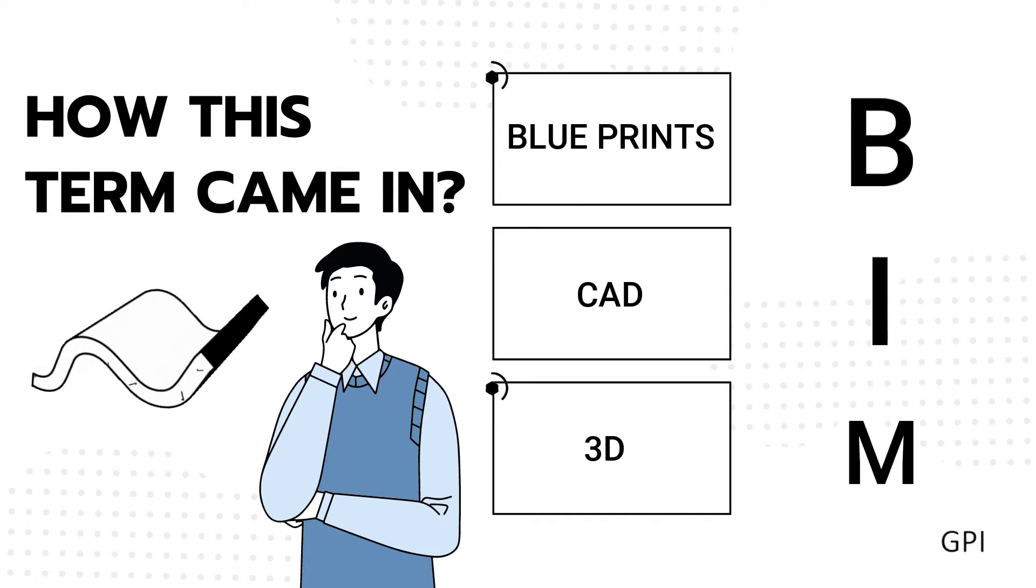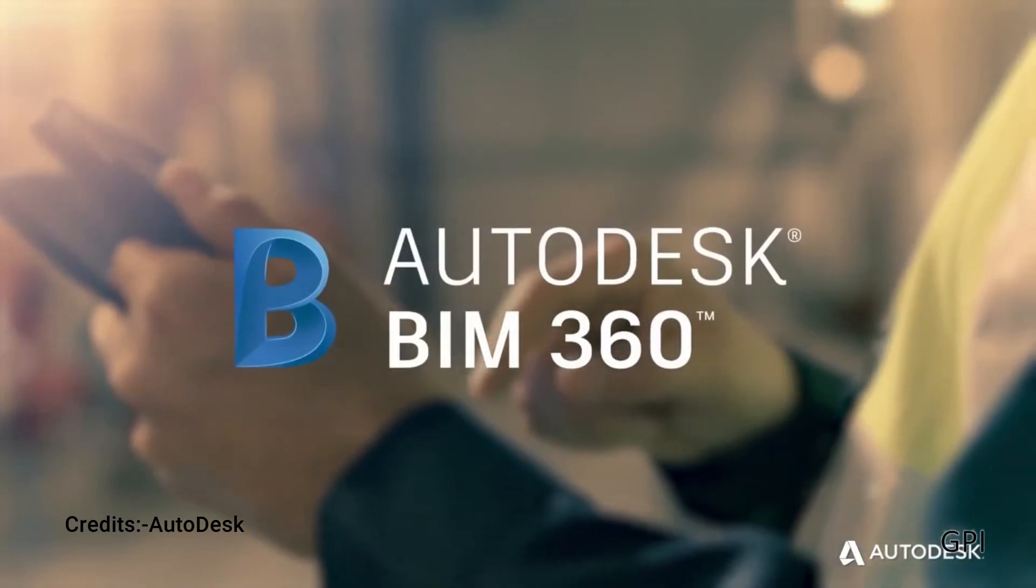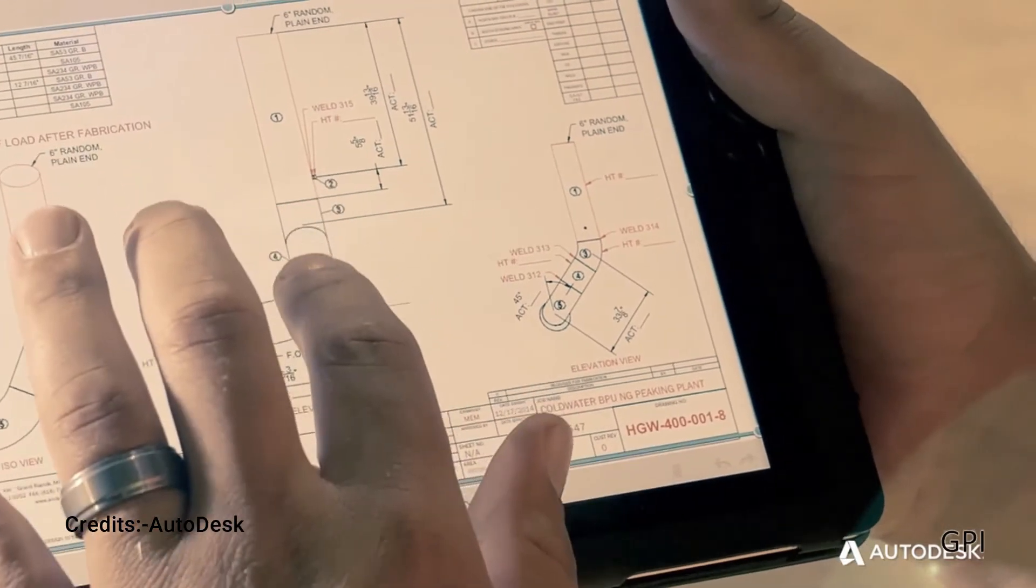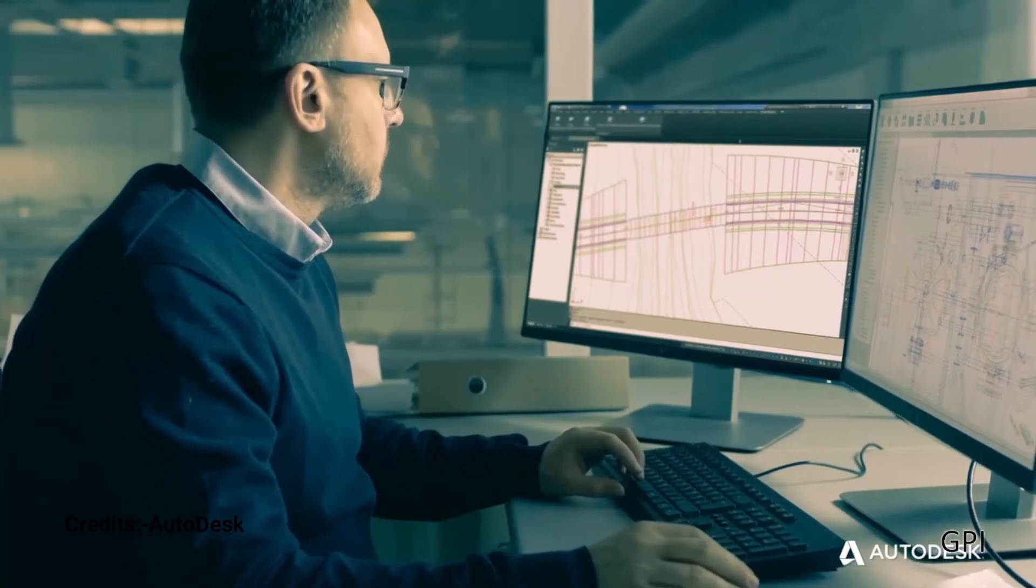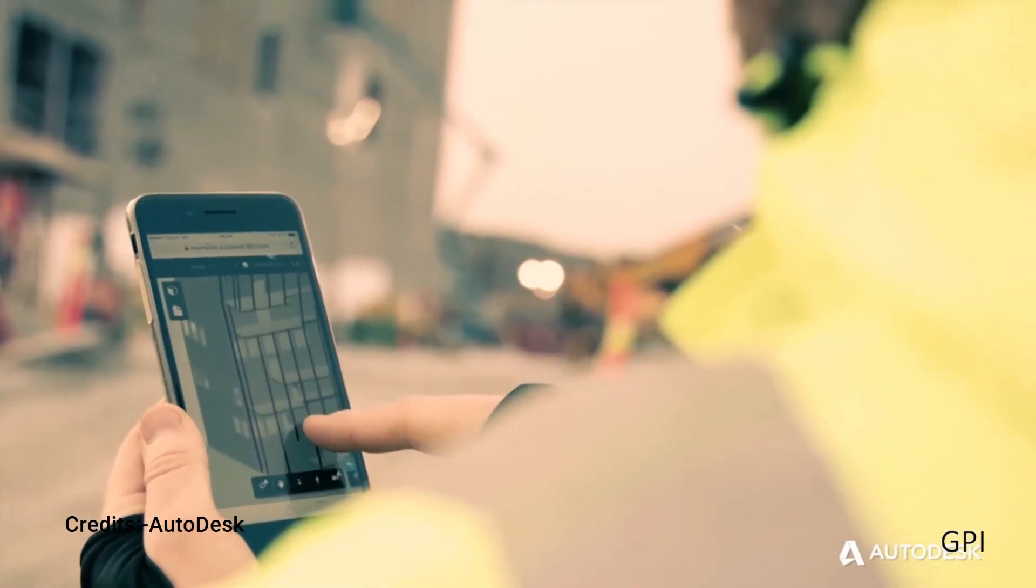Now BIM is the standard, but it's more than just a 3D model. This started when 3D software like Revit introduced the capability of modeling different services in a single model for a building.